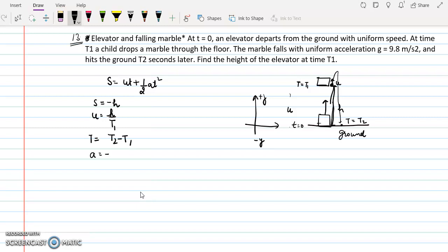What is acceleration? It is -g. So if we put all the values, minus h equals this initial velocity in the upward direction, so we put positive: (h/t1)(t2 - t1) - (1/2)g(t2 - t1)². So -h = (h·t2)/t1 - h.